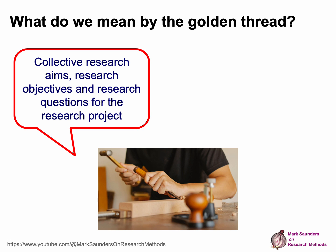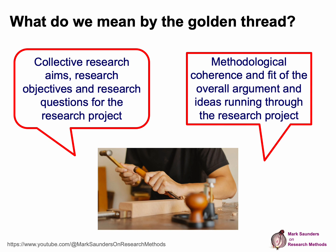So what do we mean by the golden thread? Some people say it's just a collective of research aims, objectives, and research questions for the project — nothing more. Others argue it's about methodological coherence and fit of the overall argument running through the ideas of your research project: how you start with the research question, link it back to the research philosophy, whether you're doing inductive, deductive or abductive research, and then research strategy all the way through to the actual techniques and how your research contributes. That's the way I see it, building on the work of others and linking it to the research onion.